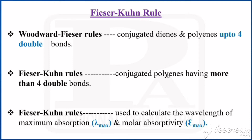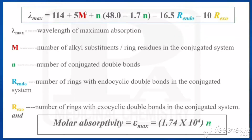The Fieser-Kuhn rule is for conjugated polyenes having more than 4 double bonds. If it has fewer than 4 double bonds, the Woodward-Fieser rule can be used for calculating lambda max. According to the Fieser-Kuhn rule, the formula for lambda max is: λmax = 114 + 5M + n(48 − 1.7n) − 16.5R_endo − 10R_exo.